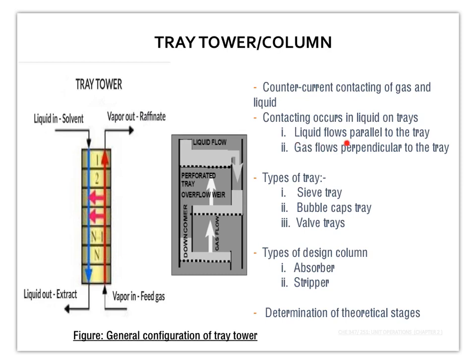Liquid flows parallel to the tray, and the gas flows perpendicular to the tray. The types of tray used in the tray tower are sieve tray, bubble cap tray, and valve tray.